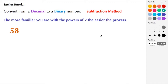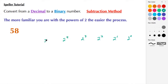Something to keep in mind is that the more familiar you are with the powers of two, the easier this conversion process is. The number we're going to convert from decimal to binary is 58. Let's begin by listing our powers of two: 2 to the 0, 2 to the first, 2 to the second, 2 to the third, 2 to the fourth, 2 to the fifth, and 2 to the sixth.